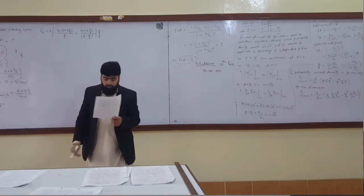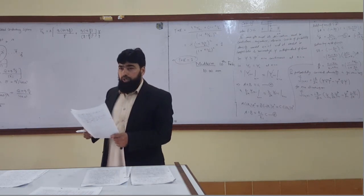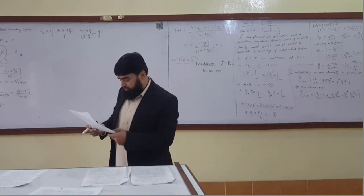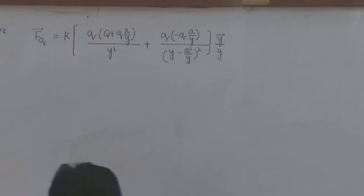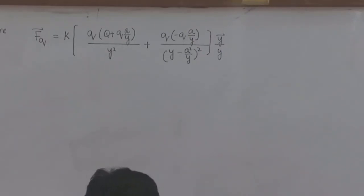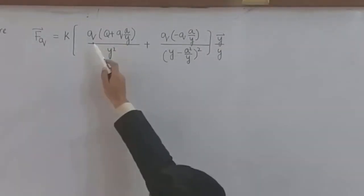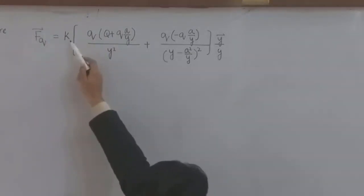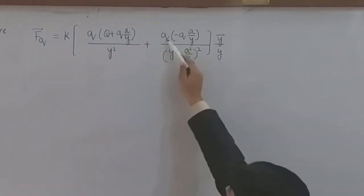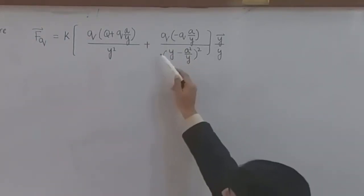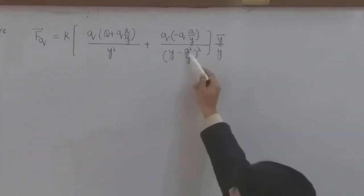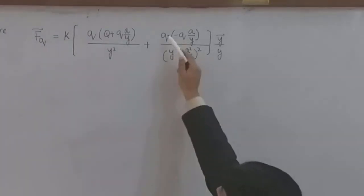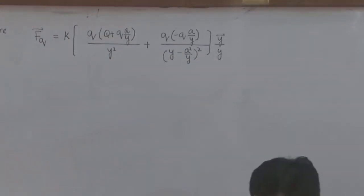So, y-vector by y means y unit vector. This force is in the direction of y. Now, I can simplify this one. If we look here, then q over y squared — if I take this one as common, then q over y squared will come here.